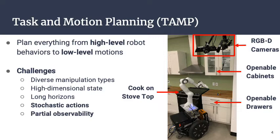These problems can be quite difficult for a number of reasons. There might be many types of manipulations the robot can perform, such as picking, pushing, pulling, or pouring. The state is usually very high-dimensional because of the many objects present, and the robot might need to act over long horizons to achieve several goals in sequence. Mostly in this paper, we focus on dealing with problems that are stochastic — the robot's actions are noisy, either at a very low level or at a high level in terms of failure — and the world is partially observable.